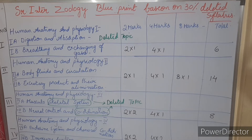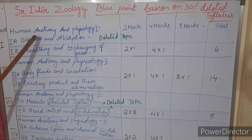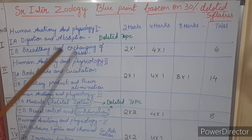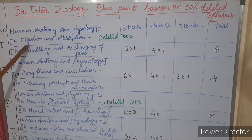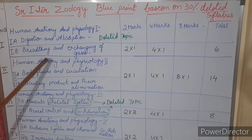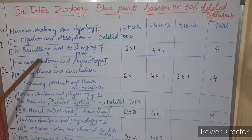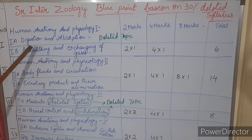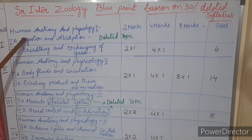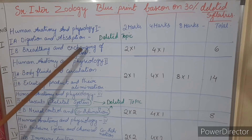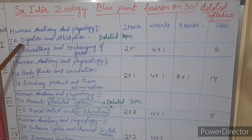The first unit is Human Anatomy and Physiology 1. In that unit we have two sub-units: 1A — Digestion and Absorption, and 1B — Breathing and Exchange of Gases. In these two, 1A is completely deleted. Digestion and Absorption is a deleted topic, so we won't get any questions from this chapter.